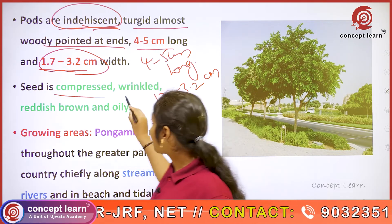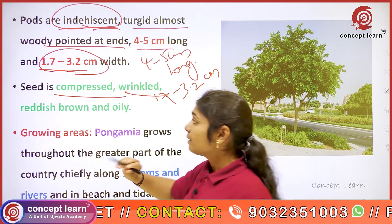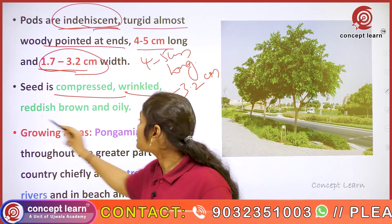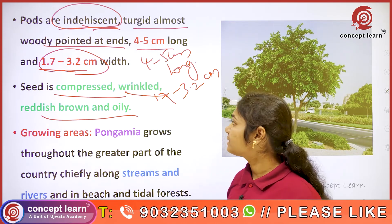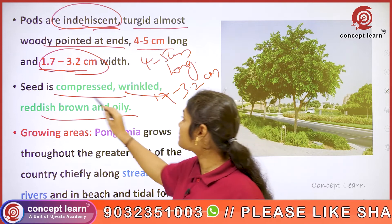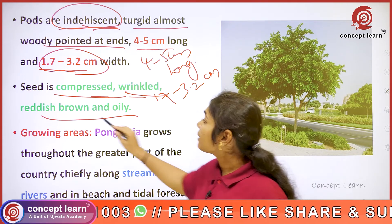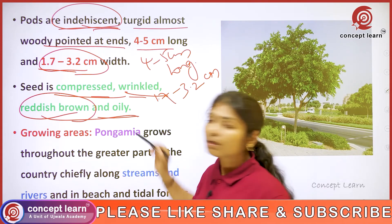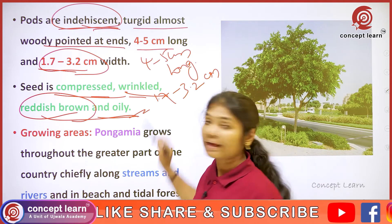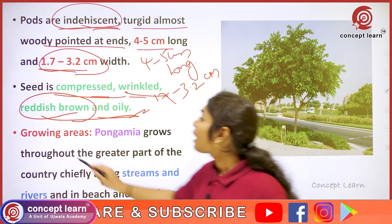The seed is compressed, wrinkled, reddish brown, and oily. You should remember these characters of the seed of Pongamia.